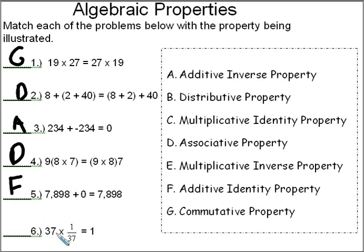In number 6, we're taking a number times its reciprocal. 1 over 37 is the reciprocal of 37. If we take a number times its reciprocal, we always get 1. And I have to say this one subtly. It's called the multiplicative inverse property, which is letter E.